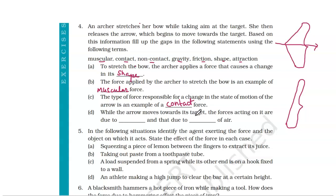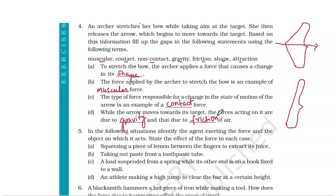Part D: while the arrow moves towards its target, two forces are acting on it. One is gravity acting downward, and the other is friction of air — also called drag — acting opposite to the direction of motion.